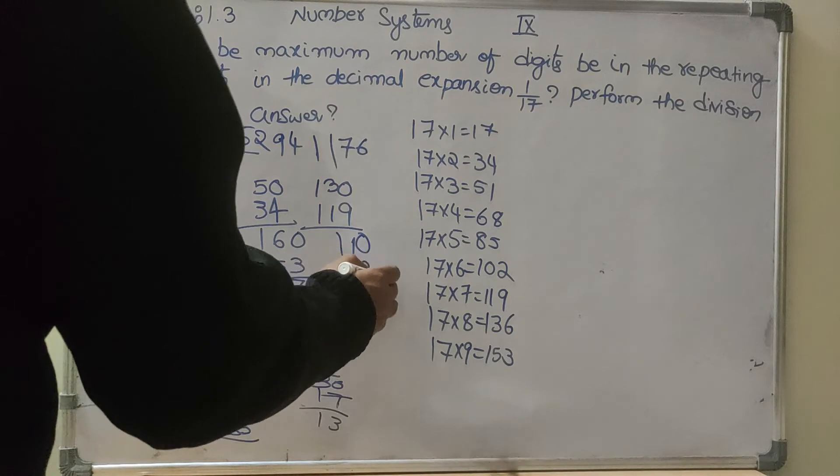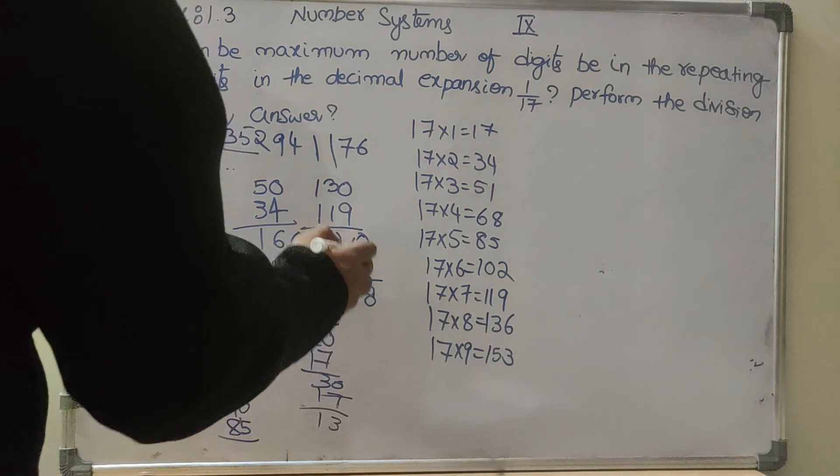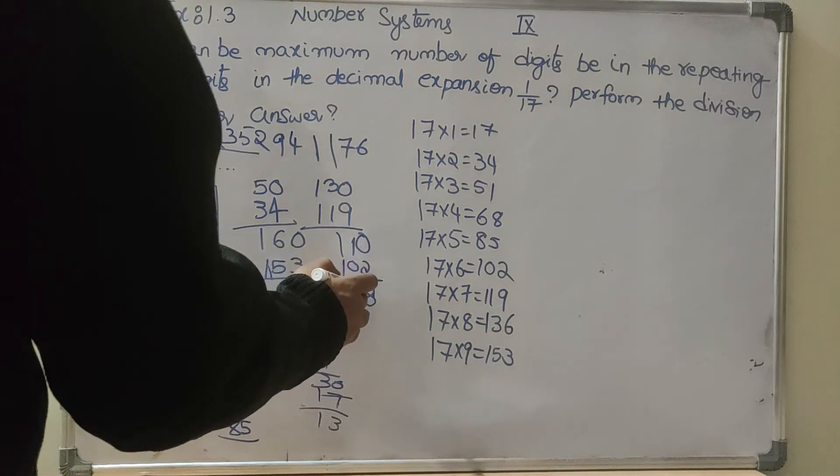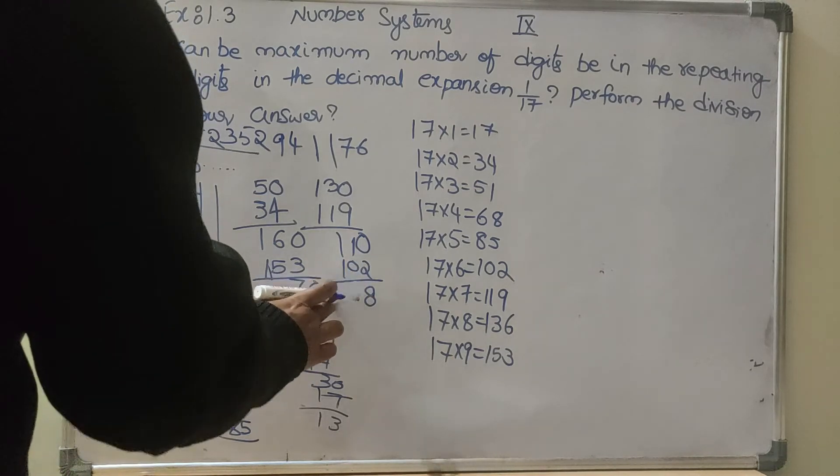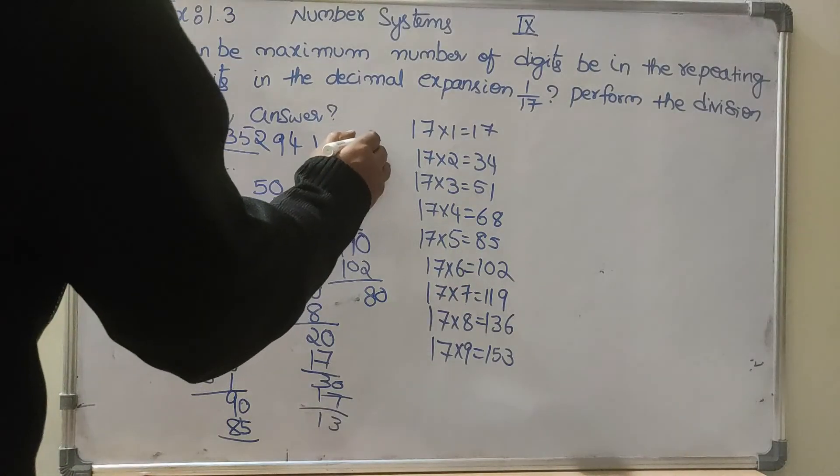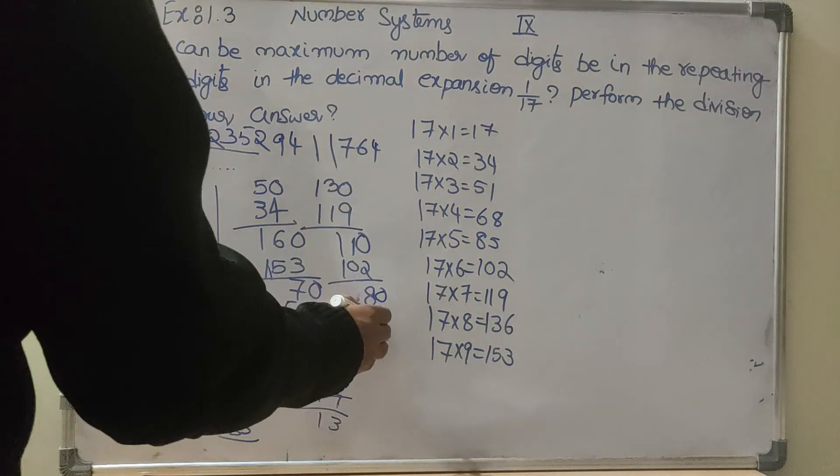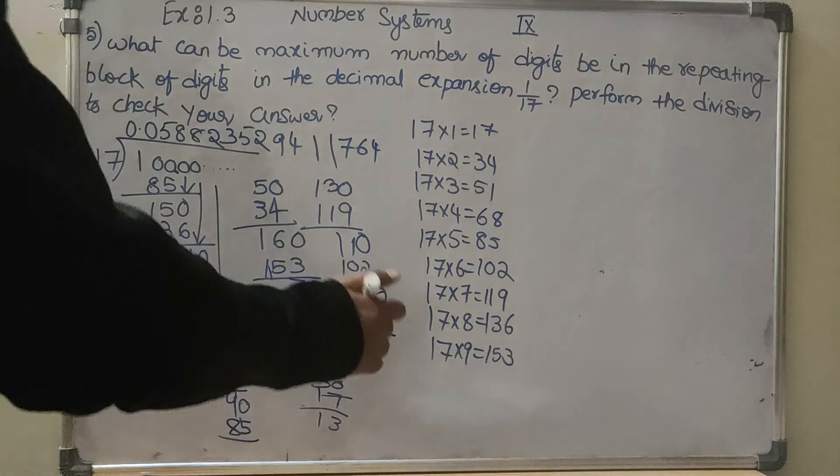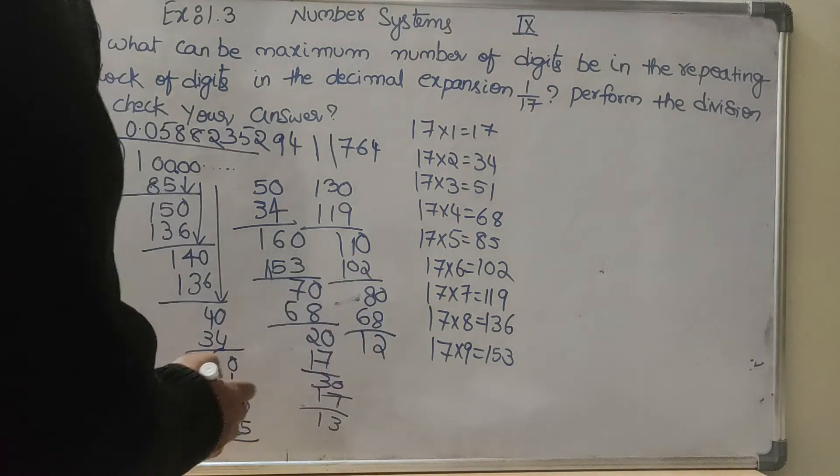So 0 comes here, 80 means 4 times, 68, 12 is the remainder.